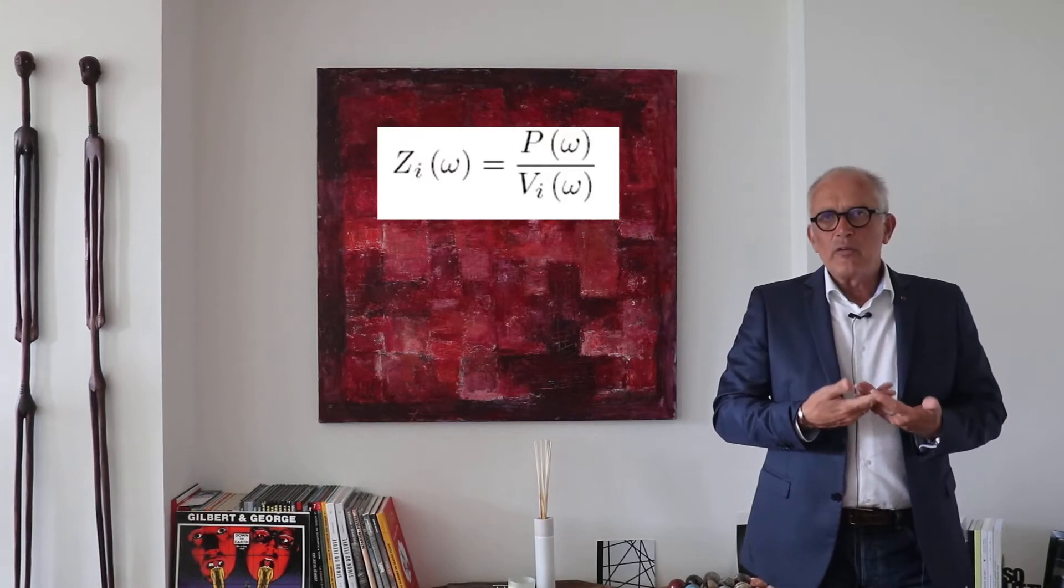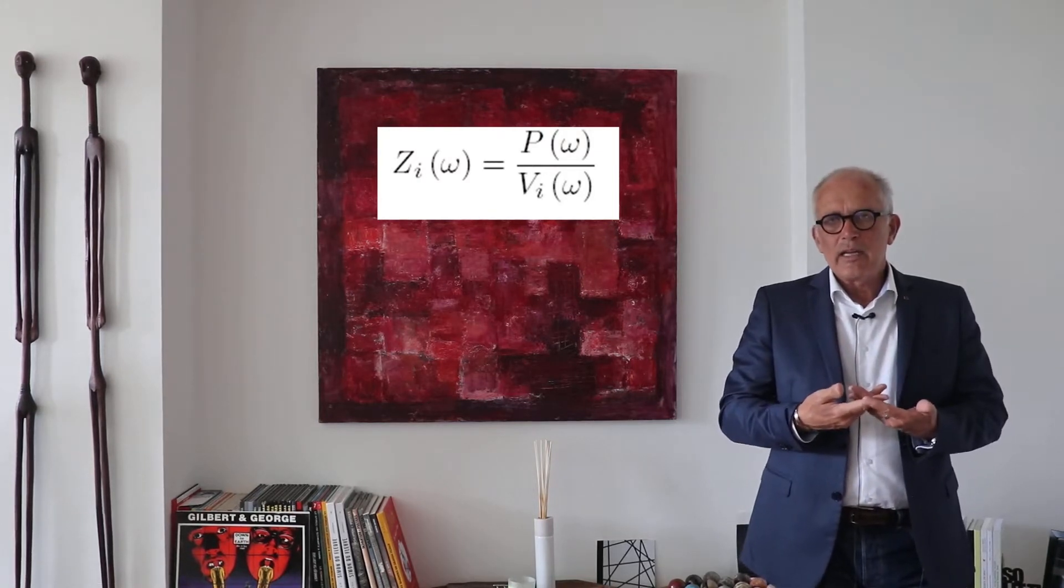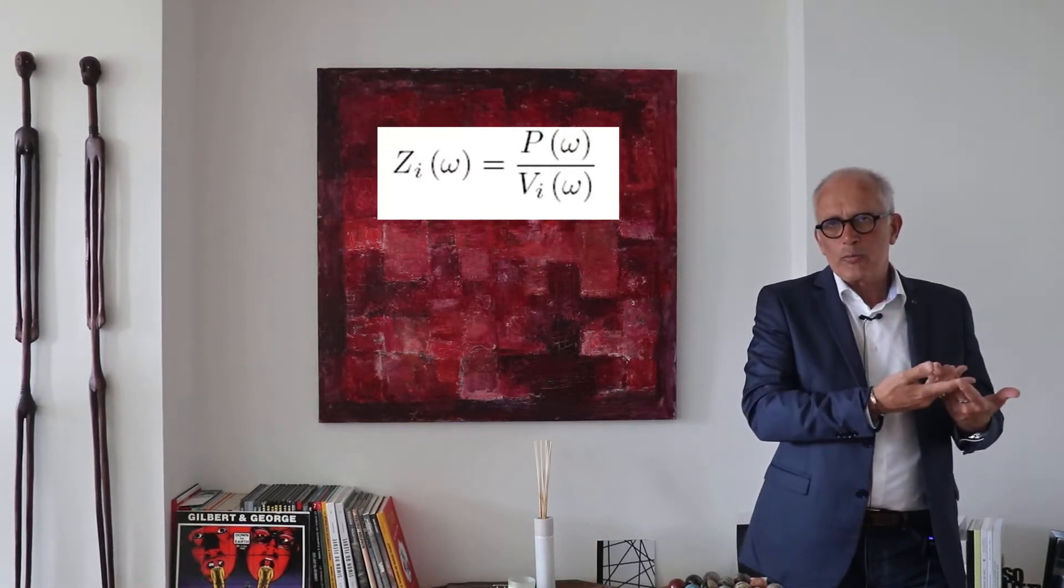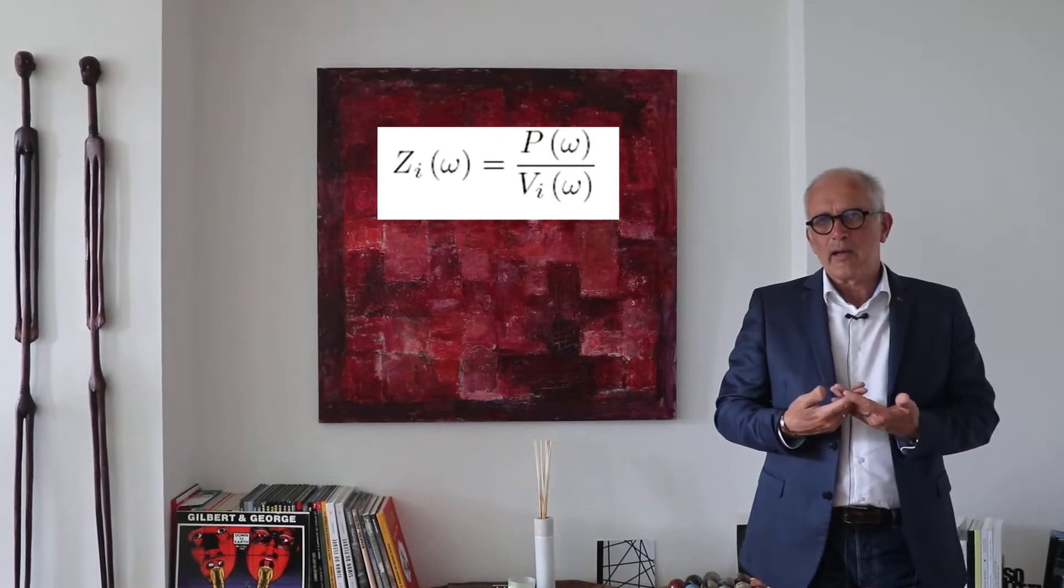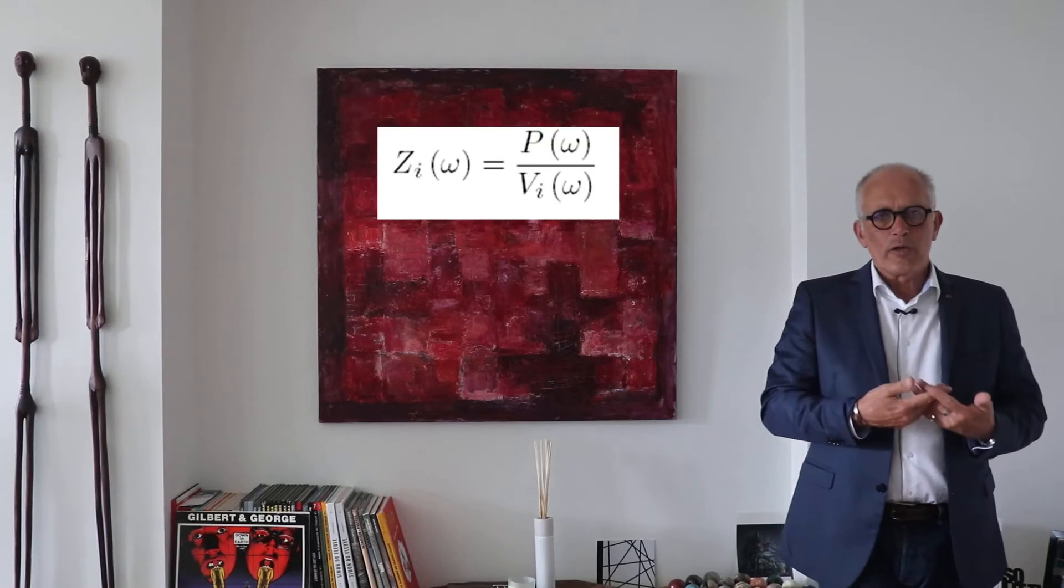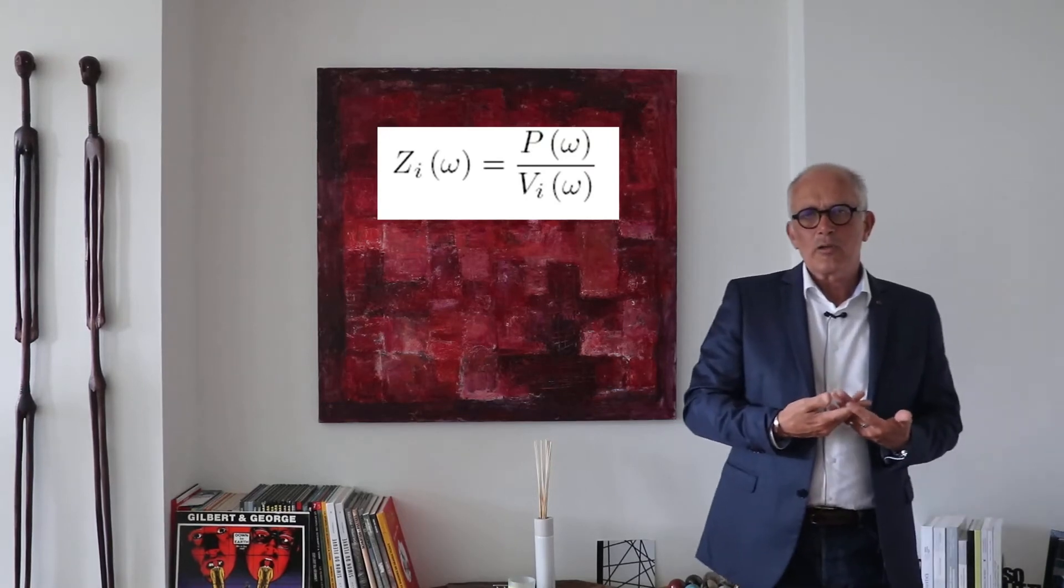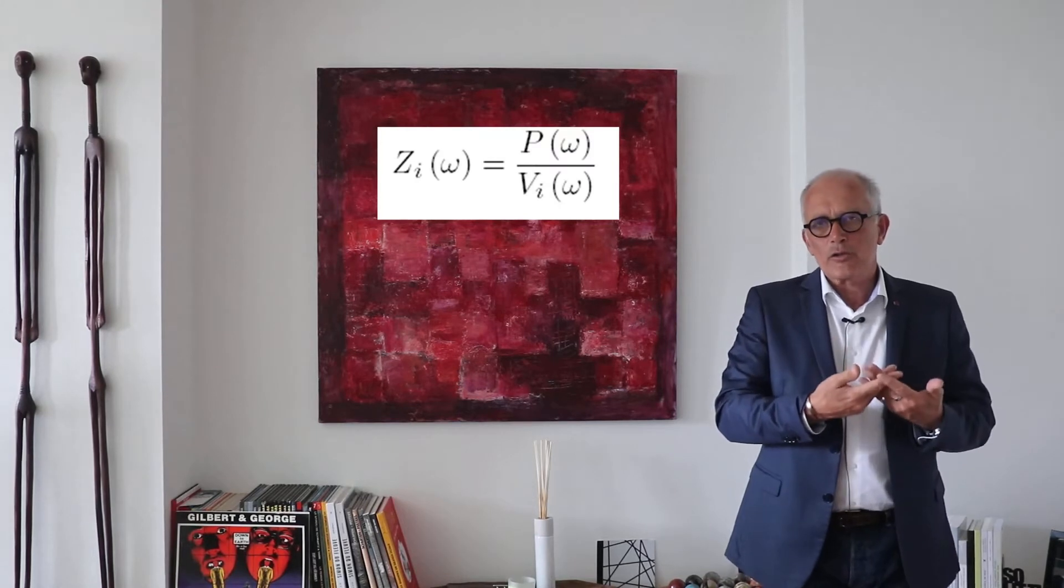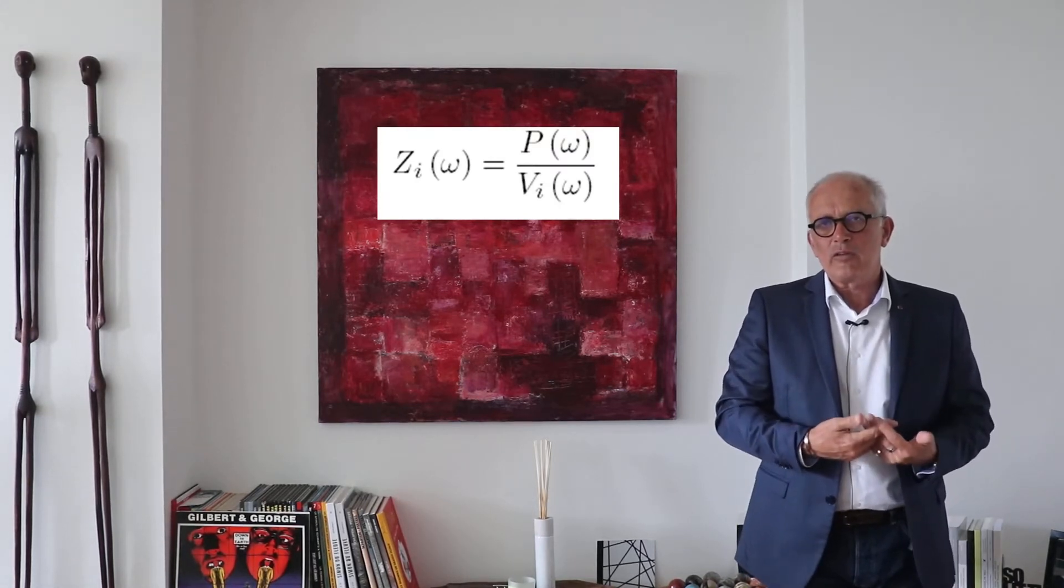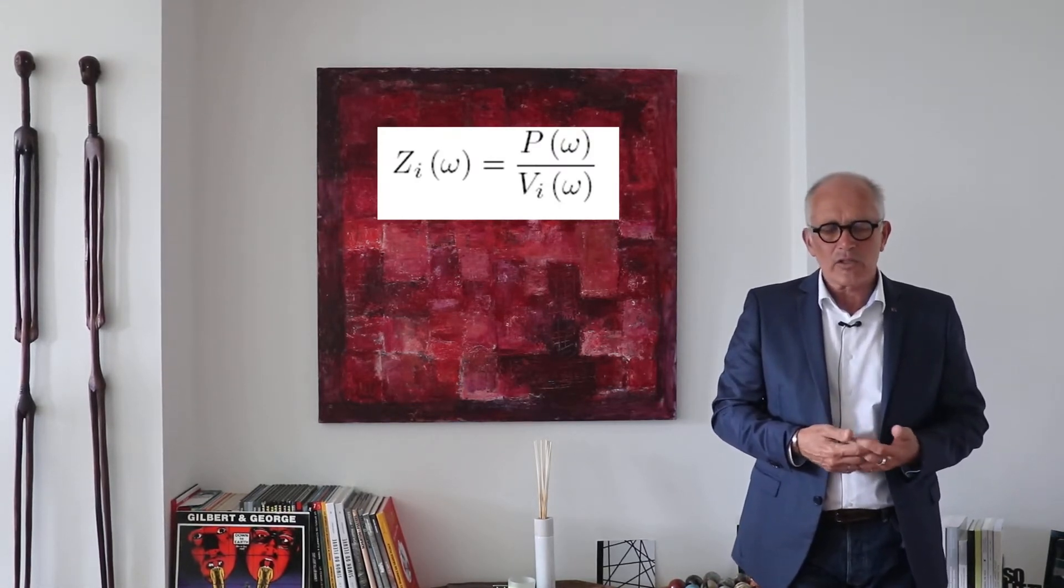The acoustical impedance in a given direction is the ratio of the pressure spectrum to the velocity spectrum in that direction. So for instance, in the x-direction, the x impedance is the pressure divided by the velocity component in the x-direction.